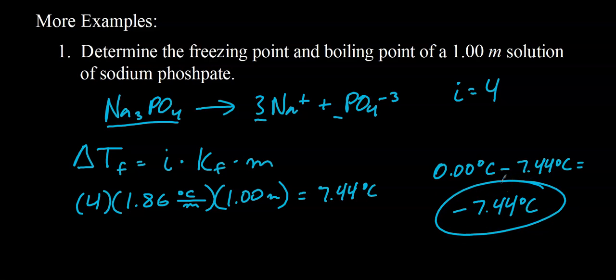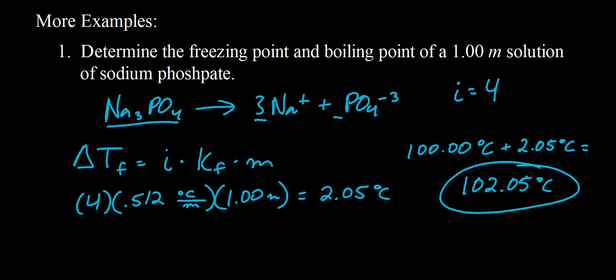Notice the much bigger difference compared to a non-ionizing solute where i = 1, which would give only −1.86°C — here we have 4 times that at −7.44°C. Now calculating the boiling point: the change in boiling point is 2.05°C, so the boiling point of this aqueous solution would be 102.05°C.